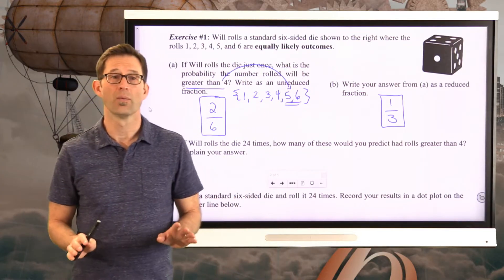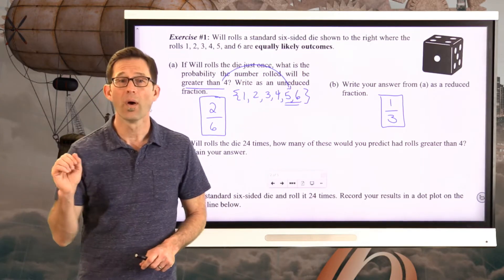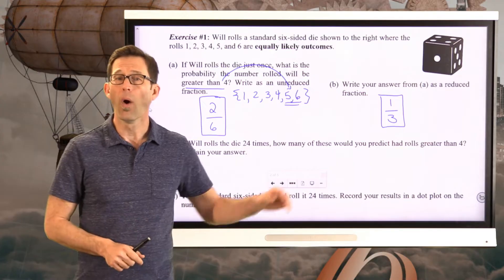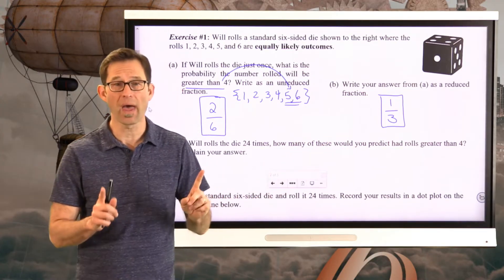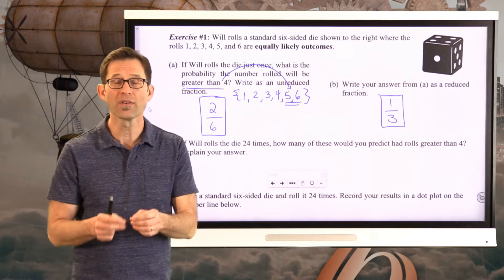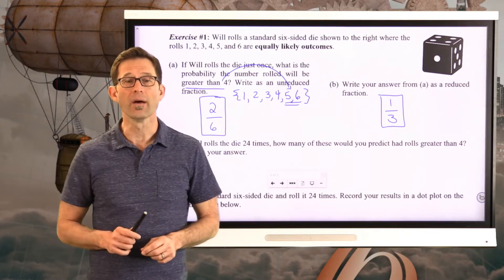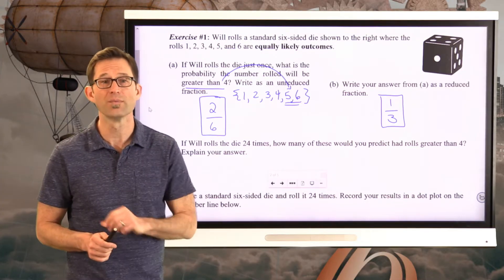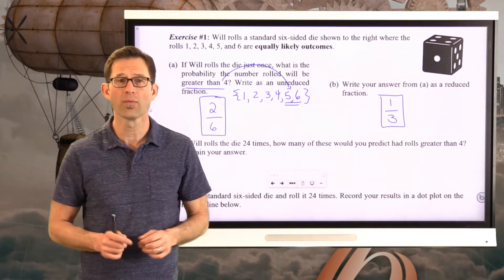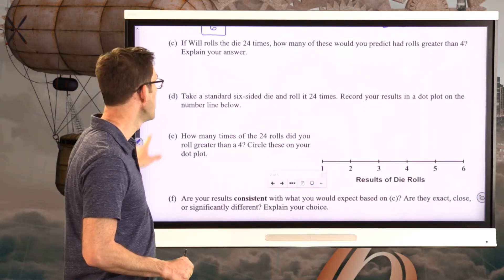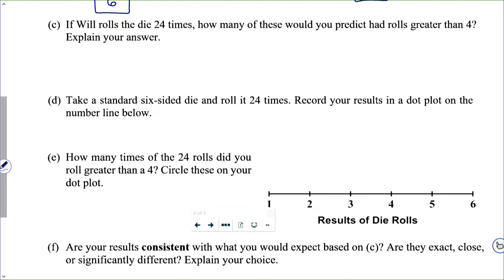I want you to really understand what that means. That means that if I roll this die a bunch of times, however many times, 1/3 of the times we would expect or we would predict 1/3 of the time for a number greater than 4 to be rolled. By the way, eventually you're going to need a die, a single six-sided die for this problem. So make sure to have one of those handy. Let's take a look now at letter C.